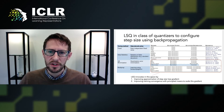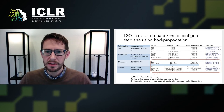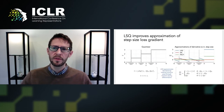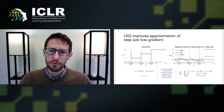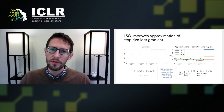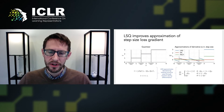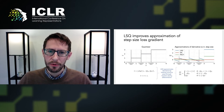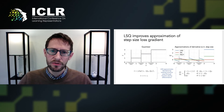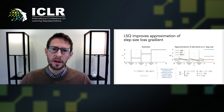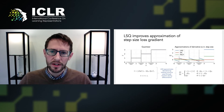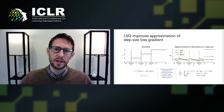LSQ innovates in this space by improving the approximation of the step size loss gradient and by providing a principled means to scale this gradient. Strictly speaking, the derivative through a standard uniform quantizer is zero for almost all values due to the presence of the round function, and you can note this in the staircase shape of the quantizer that is flat at almost all locations except the transition points. LSQ computes the derivative through the quantizer to the step size parameter by treating the round function as a pass-through function for the purposes of differentiation, similar to an approach commonly taken in quantized networks for computing the derivative through the quantizer to its input.